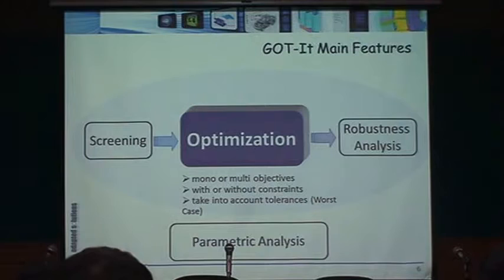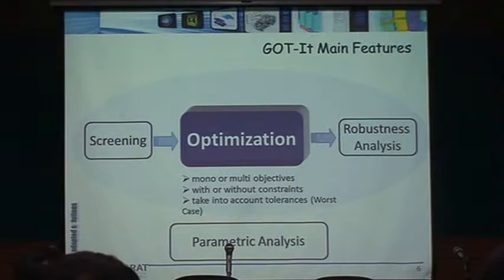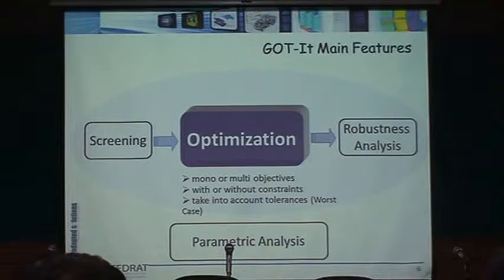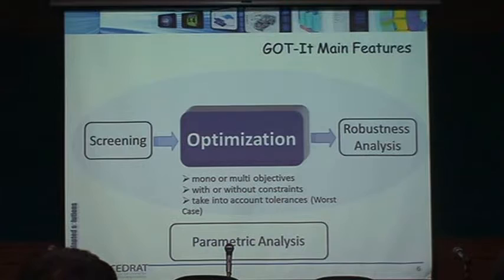Doing an optimization process is quite difficult — you have many parameters that may or may not affect your solution, depending on what people are allowed to change. The optimization may be mono- or multi-objective. For example, you might want to get the best output and the lowest power — that's a multi-objective problem. Or on an induction machine, you want the best torque at locked rotor, at maximum torque, and at rated condition — again multi-objective.